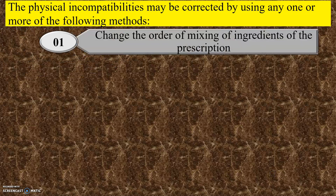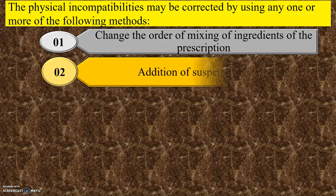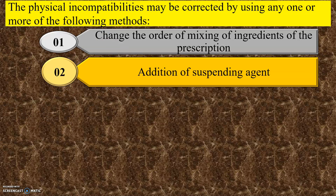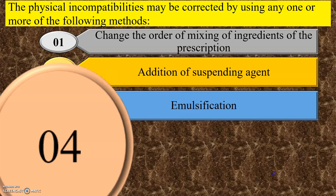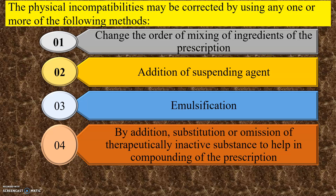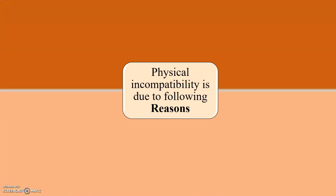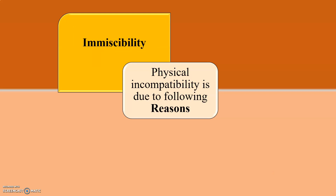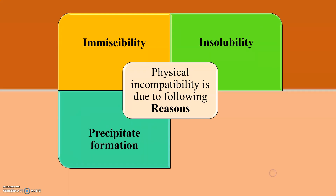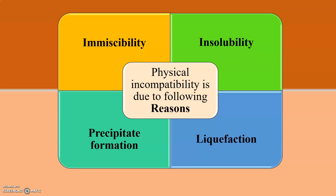Physical incompatibility may be corrected by using any one or more of the following methods: first, by changing the order of mixing of ingredients; second, by addition of a suspending agent; third, by emulsification; fourth, by addition, substitution, or omission of a therapeutically inactive substance to help in compounding the prescription; and fifth, by change in the form of ingredients. Physical incompatibility is due to the following reasons: immiscibility, insolubility, precipitate formation, and liquefaction.